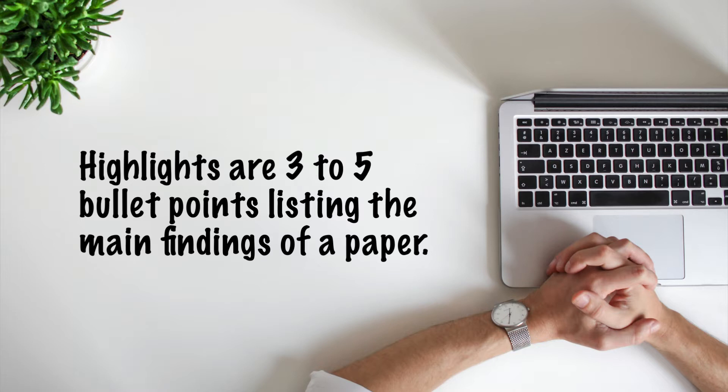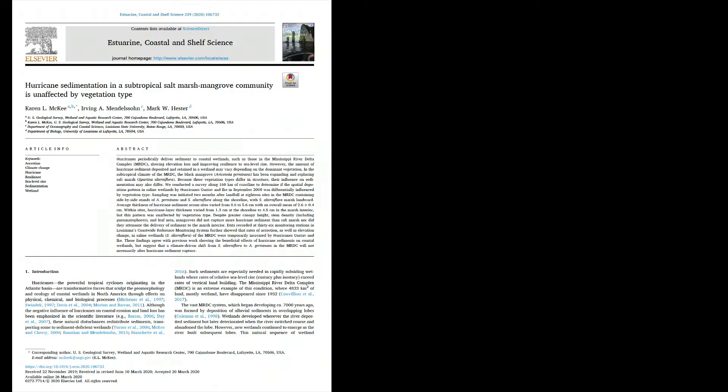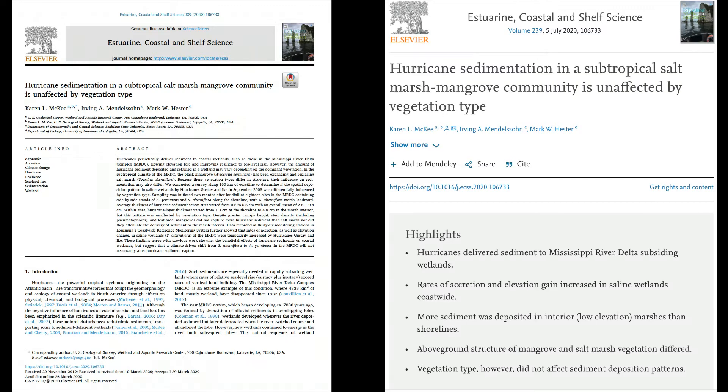Highlights usually only appear in the online journal, where they help search engines find your article. For example, this paper was published in a journal requiring highlights. The highlights weren't included in the PDF of the paper, but instead appeared in the online article, as you see here.